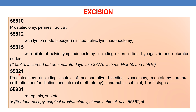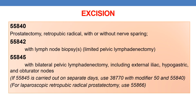The next is 55821 — prostatectomy including control of postoperative bleeding, vasectomy, meatotomy, urethral calibration and/or dilation, and internal urethrotomy; suprapubic subtotal, one or two stages. The next is 55831 — retropubic subtotal. For laparoscopic surgical prostatectomy, simple subtotal, you need to use CPT 55867. The next is CPT 55840 — prostatectomy, retropubic radical with lymph node biopsy, limited pelvic lymphadenectomy.